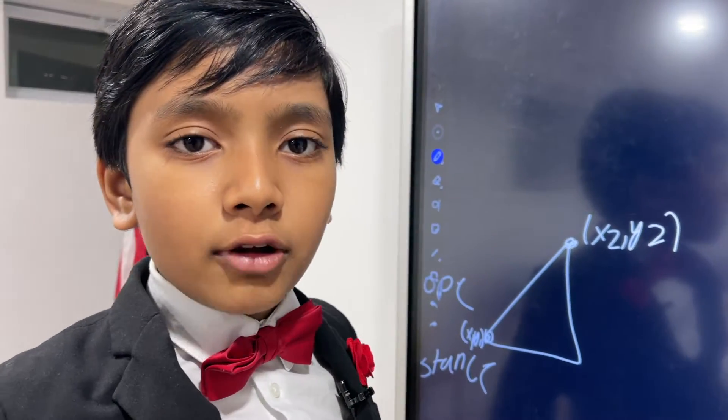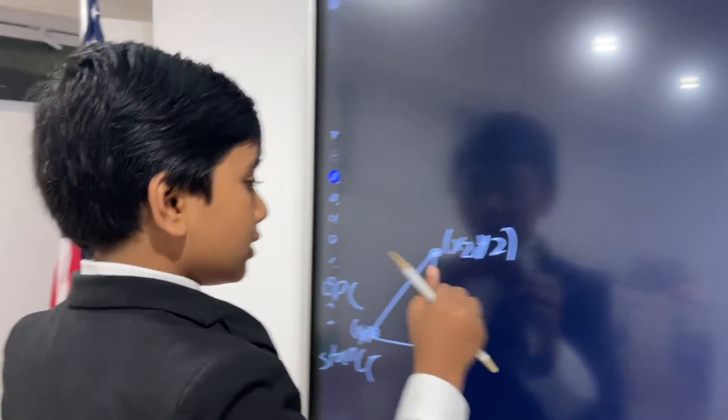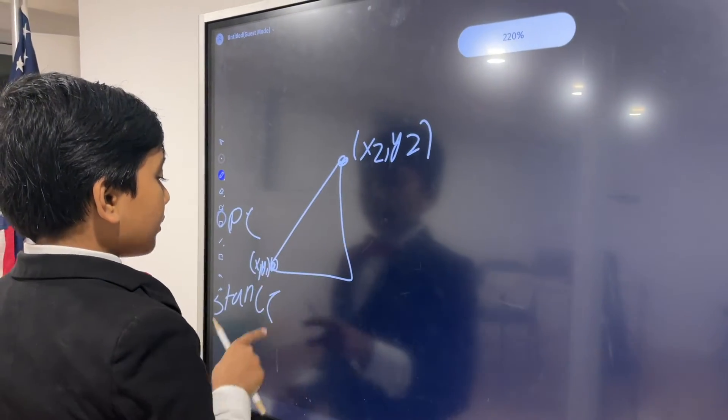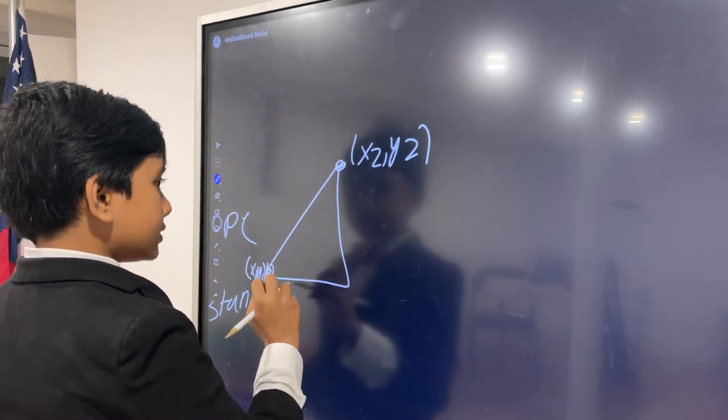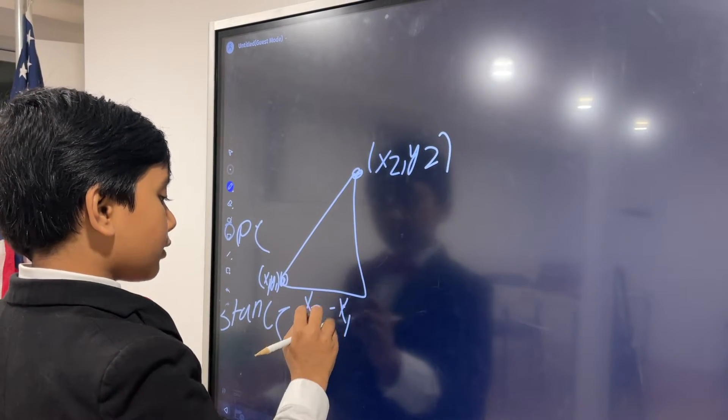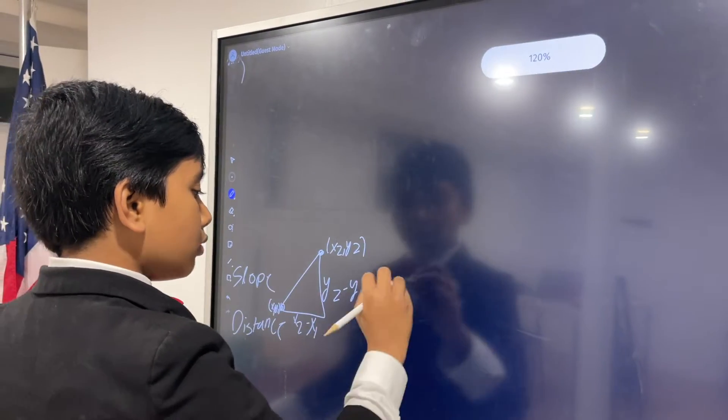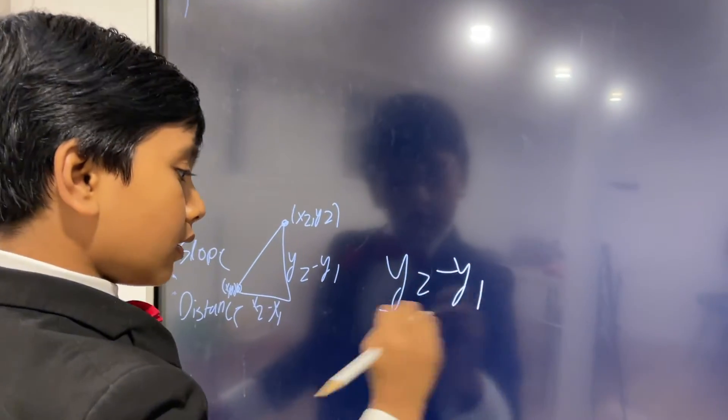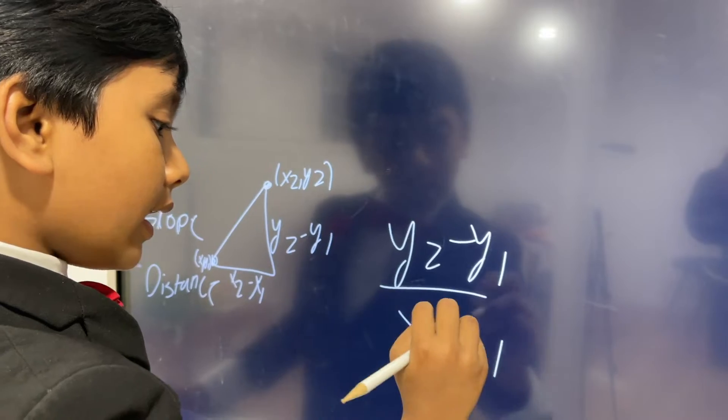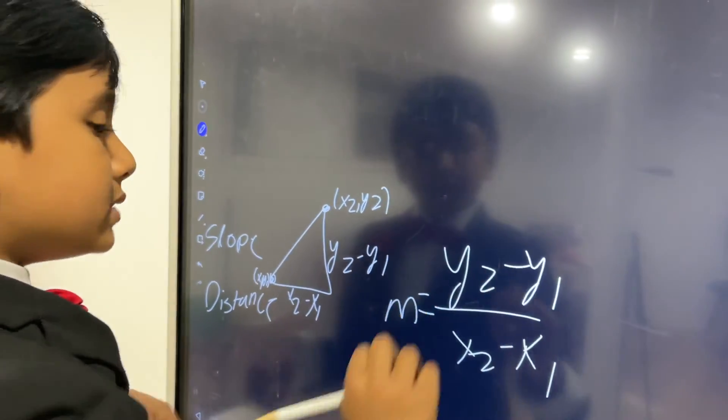So how much we're traveling in the horizontal direction would be x2 minus x1, how much we're traveling in the vertical direction would be y2 minus y1, so y2 minus y1 over x2 minus x1, and on top the slope symbol is m.